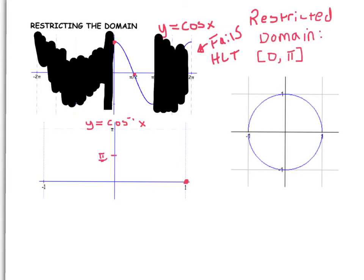And π comma negative 1 becomes negative 1 comma π. And the shape that this function takes on is like that.